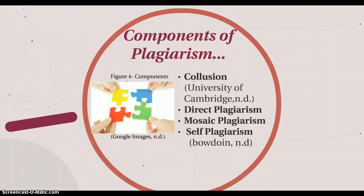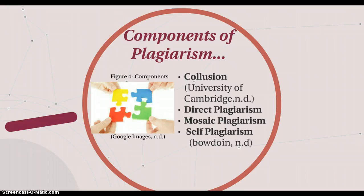The final type of plagiarism is mosaic plagiarism, also known as patch writing. This happens when students use phrases from sources without citing them or using quotation marks. Or it can be when a student uses synonyms for things the author is referring to while keeping the general structure and meaning of the original version.